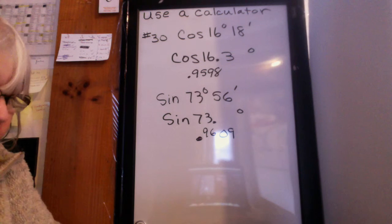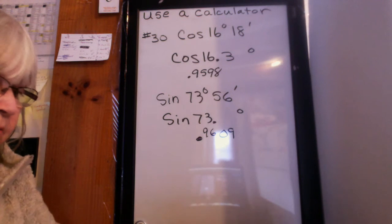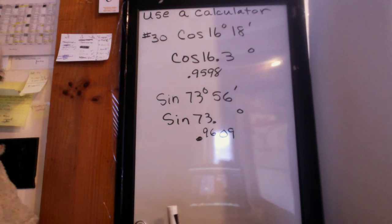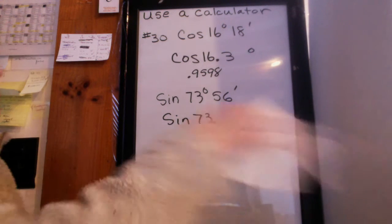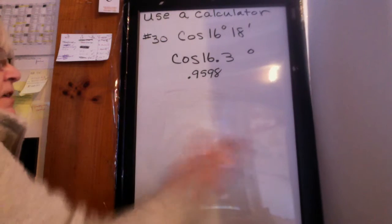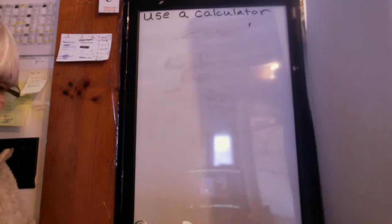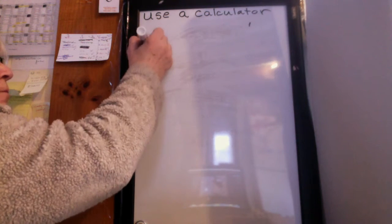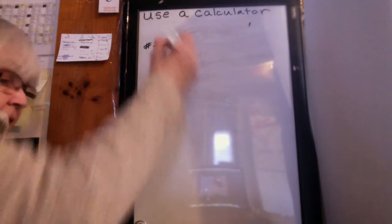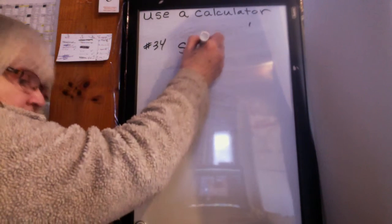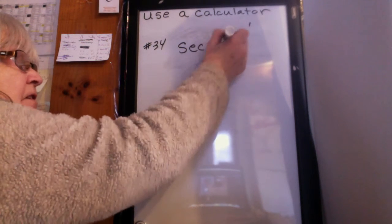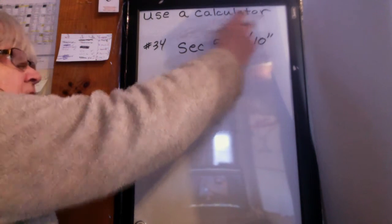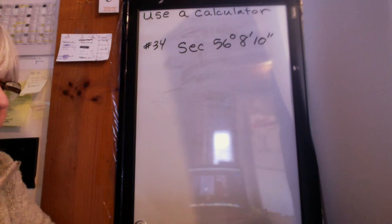Now there's also some other problems that have more than just minutes there, but they have minutes and seconds. So let's try one of those. Let me just erase this. And suppose I wanted to do number 34 out of the book, and it says to find the secant of 56 degrees, 8 minutes, 10 seconds.